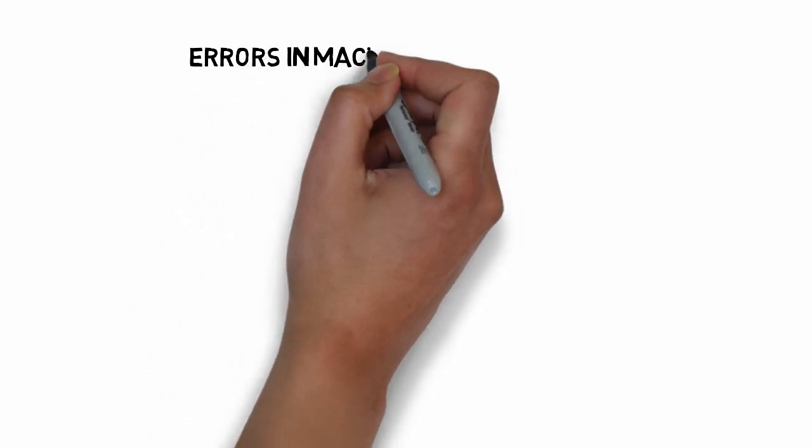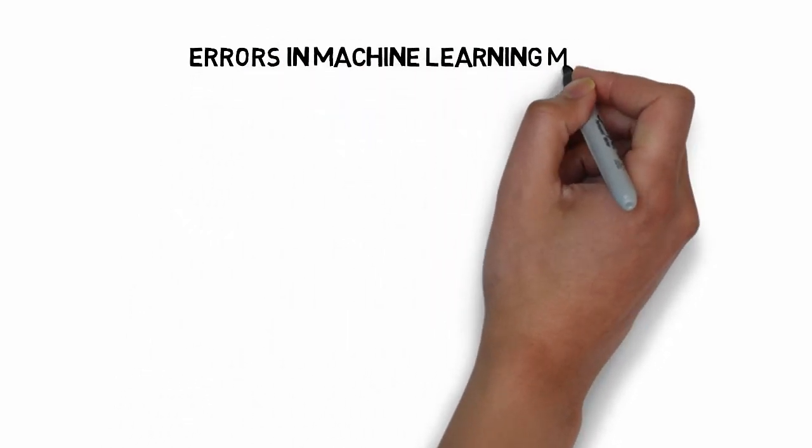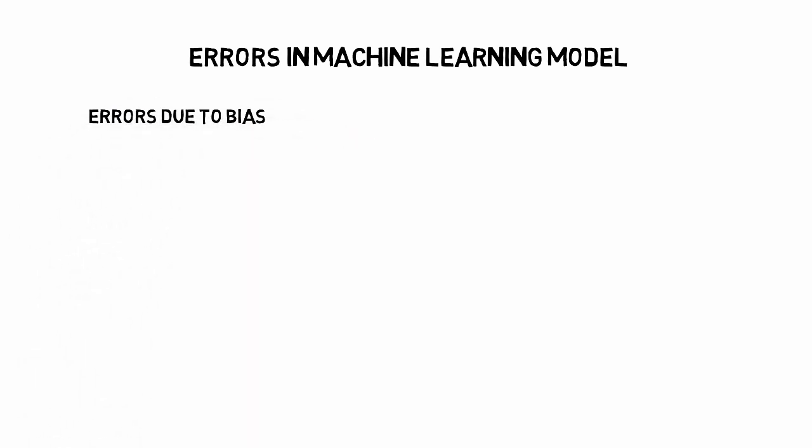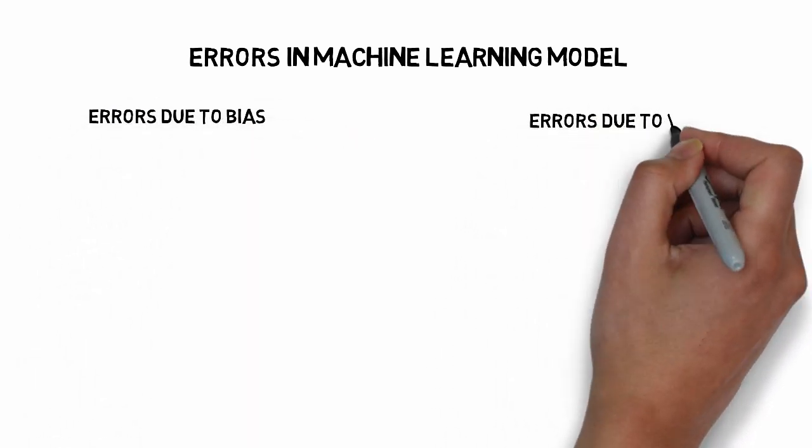The errors in machine learning model are mainly bias and variance errors. There is little irreducible errors but since it cannot be reduced, we shall not talk about it.